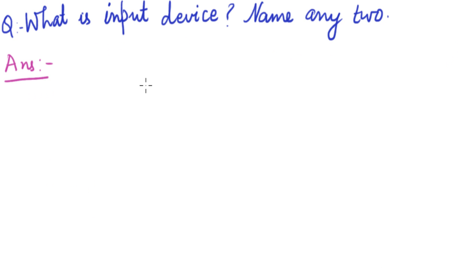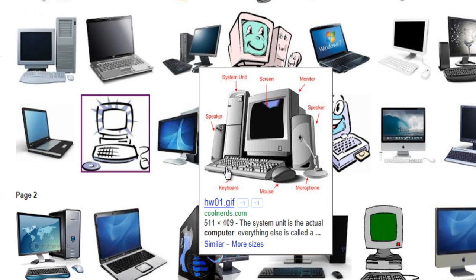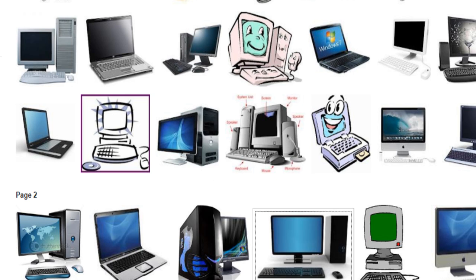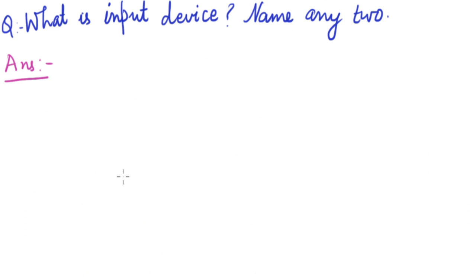The next question is: what is an input device? Name any two. In this computer, the keyboard is an input device — through it we give data or instructions. The mouse is also an input device. So the answer is: the devices through which we enter data and instructions are called input devices. Examples are keyboard, mouse, etc.